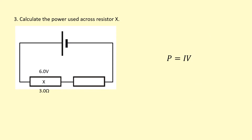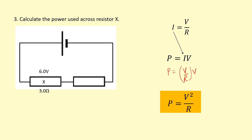What if I'm not given current? Instead, I'm given the voltage and the resistance. In that case, I can eliminate the current using Ohm's law rearranged, so I get P equals V over R times V. The V's multiply together to give power equals voltage squared over resistance, and again I'll just get 12 watts.